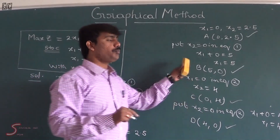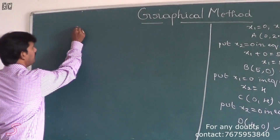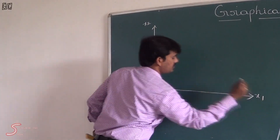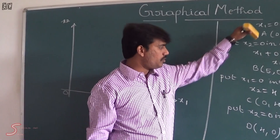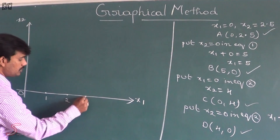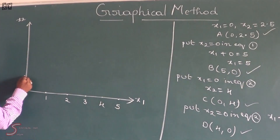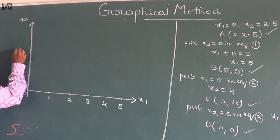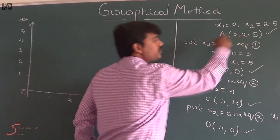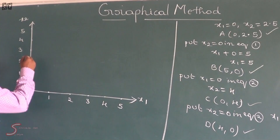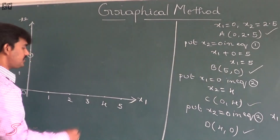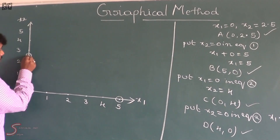Now we have to take a graph to plot all the points. Taking the axes: x1 on the horizontal and x2 on the vertical. The x1 values go from 0 up to 5, so I am taking the scale 1, 2, 3, 4, 5, and similarly for x2: 1, 2, 3, 4, 5. I am plotting the first point A: x1 is 0, x2 is 2.5 — that is, 2.5 is in between 2 and 3. For point B: x1 is 5, x2 is 0. This is all about the first equation.